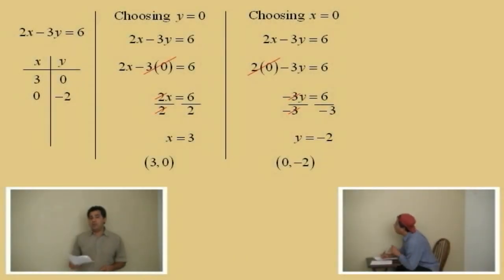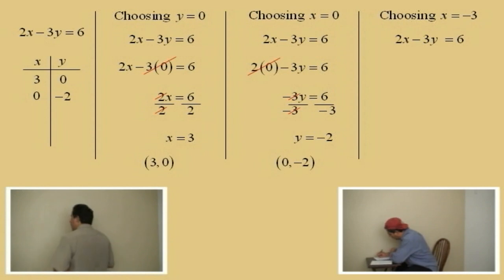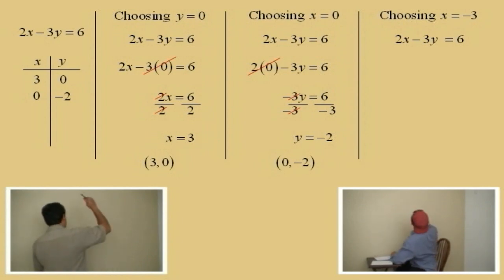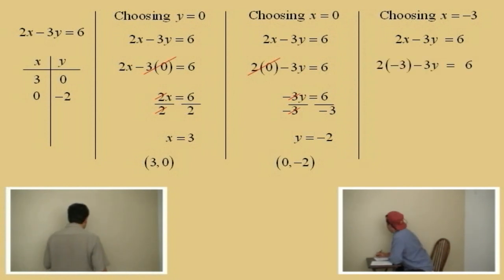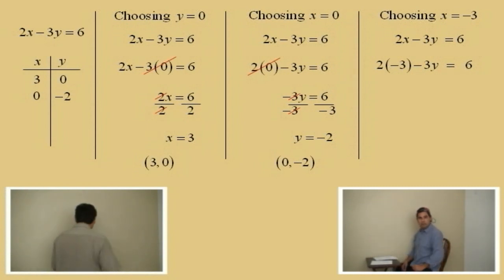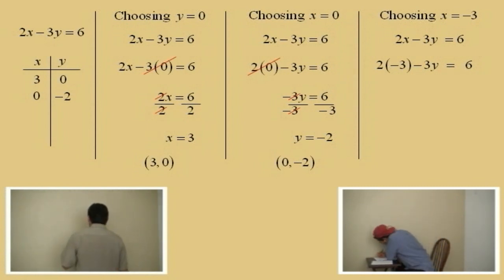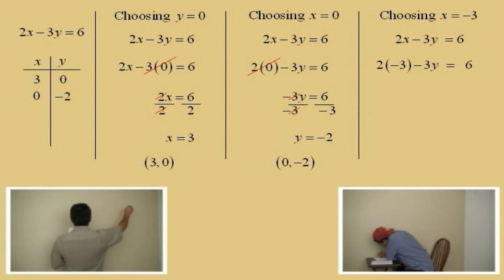Let's choose another x value to try. Let's choose x equal negative 3 and see what happens. There's our equation. Now, we're going to substitute into our equation x equals negative 3. Sorry about that. What's 2 times negative 3?